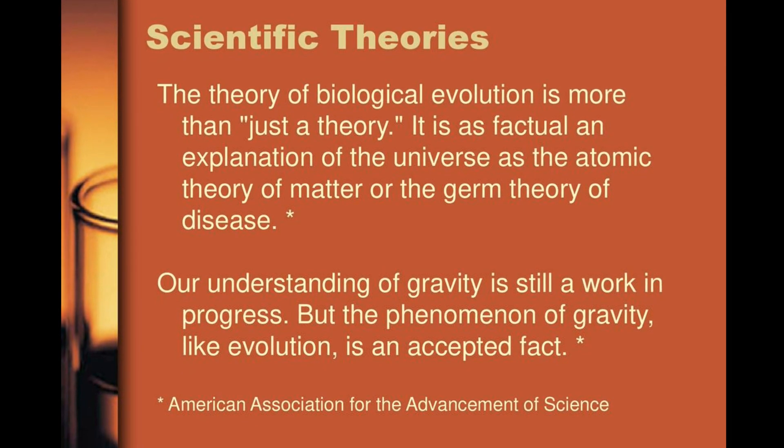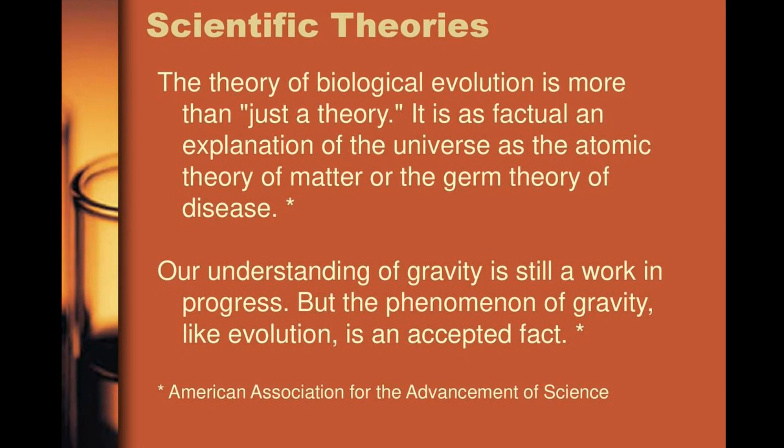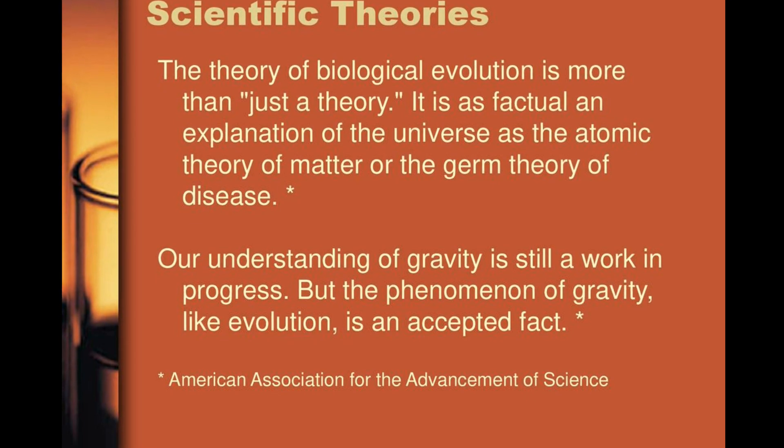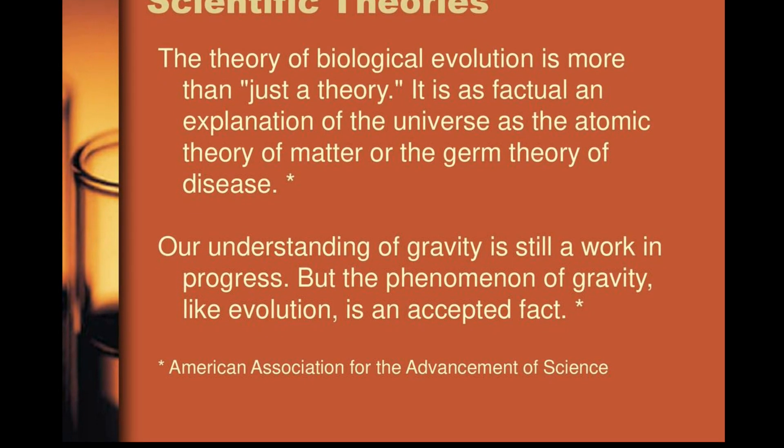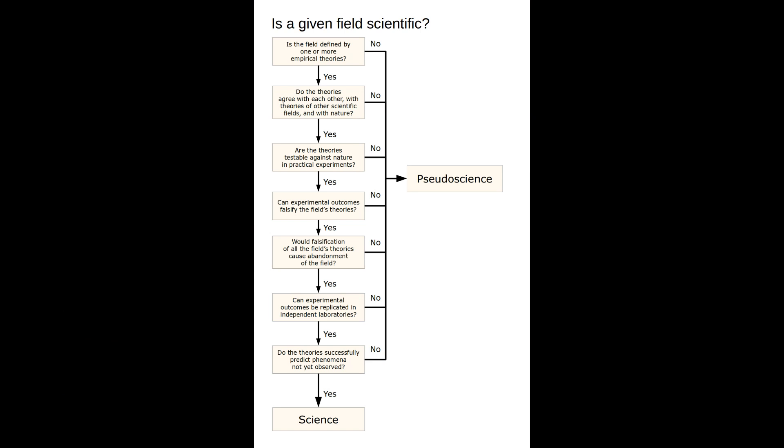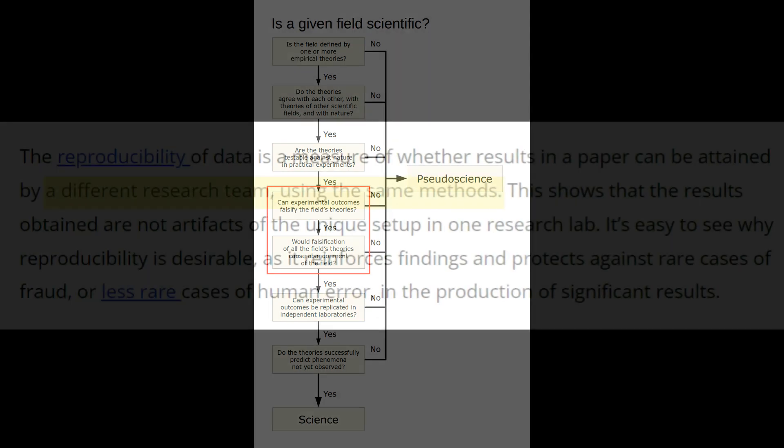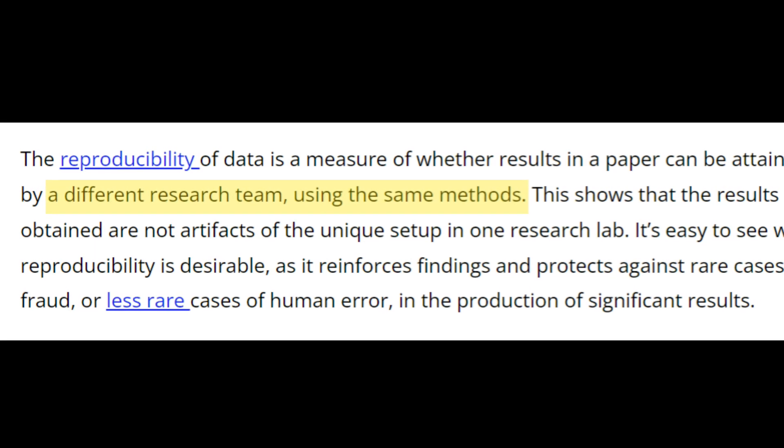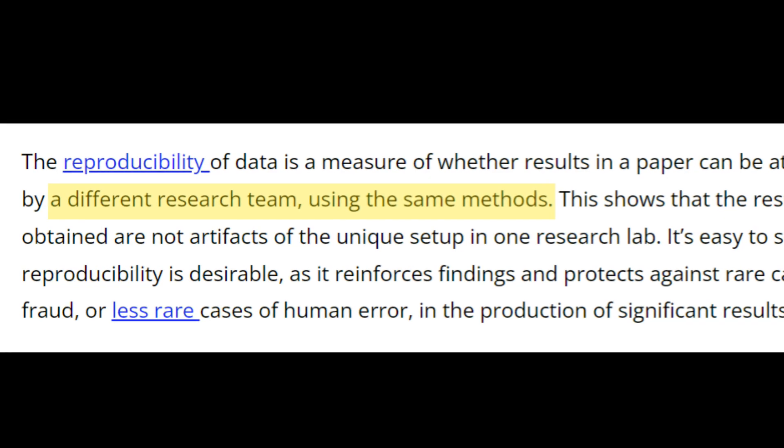Evolutionary theory is the best scientific explanation for the observed phenomenon of evolution. For a hypothesis or theory to be scientific, it must make testable predictions that could potentially prove the claim false, and the claim must be reproducible so that others can verify the results.